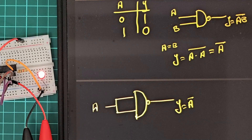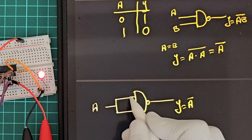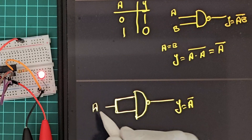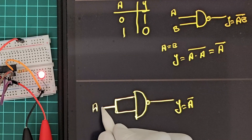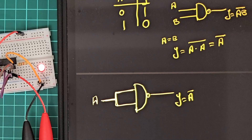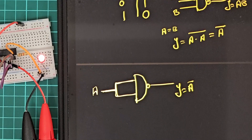So what we need to do is just short the two inputs together, and connect one signal as the input — then it will act as a NOT gate.